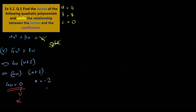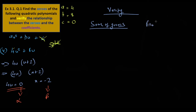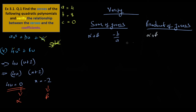I can verify it. Sum of zeros is alpha plus beta, which equals minus b by a. Product of zeros is alpha times beta.